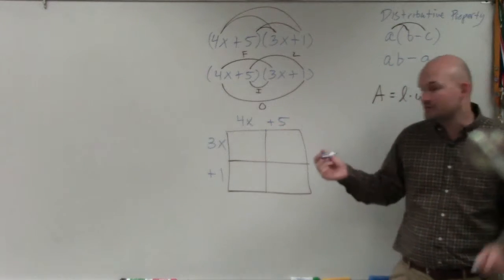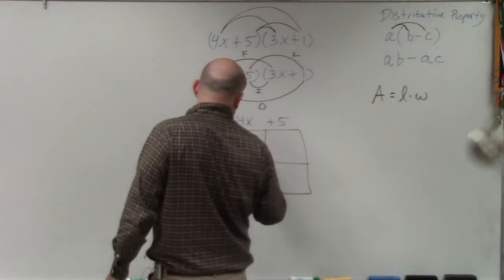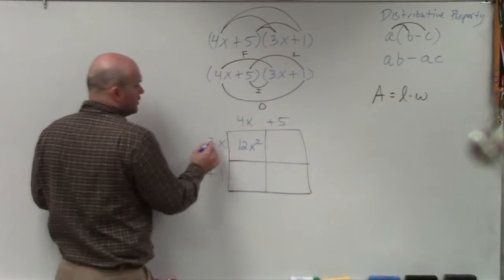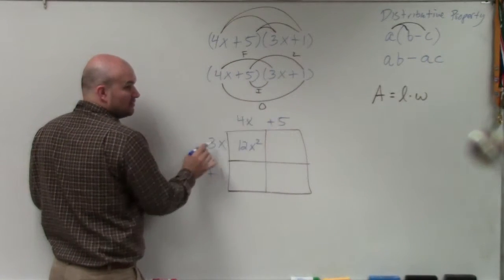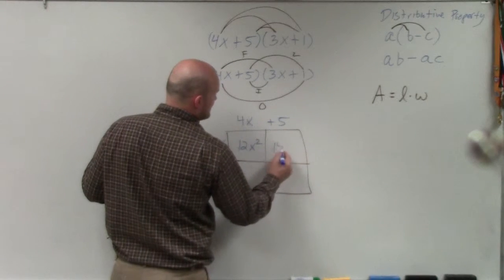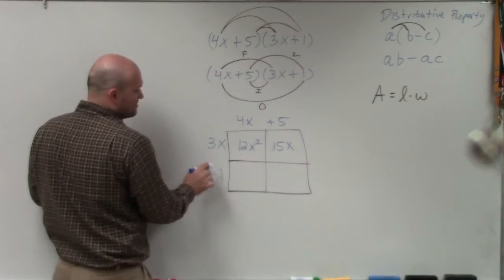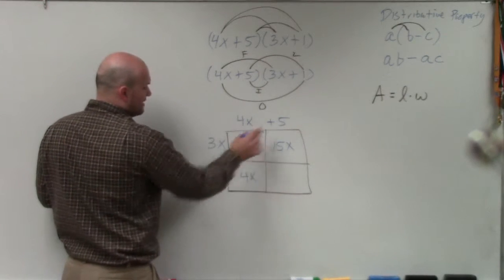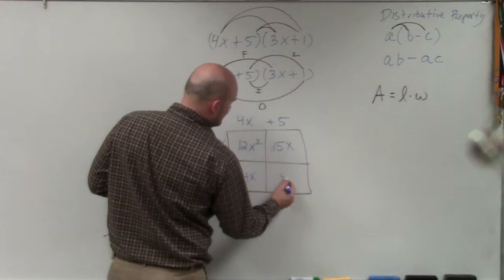3x times 4x is going to give us 12x squared. 3x times 5, you can only multiply the numbers, is going to give you a positive 15x. 4x times 1 gives you a positive 4x. And 5 times 1 gives you a positive 5.